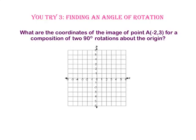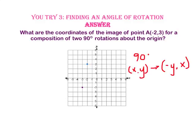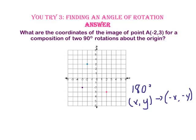Pause the video and do You Try number 3. What are the coordinates of the image of point A at negative 2, 3 for a composition of two 90 degree rotations about the origin? Start by plotting point A at negative 2, 3. A 90 degree rotation switches the order of x and y and makes the y coordinate negative, giving us negative 3, negative 2 for the first 90 degree rotation.